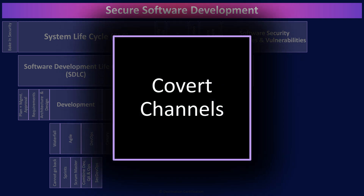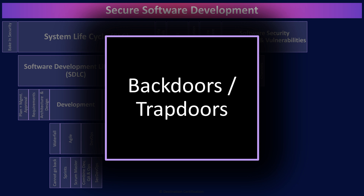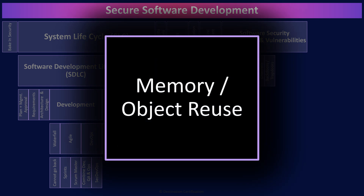Covert channels are an unintentional communications path that has the opportunity to disclose confidential information. There are two major types of covert channels: storage and timing, and storage is by far the most common. Backdoors, also known as trapdoors, are intentional covert methods of gaining access to a system and bypassing the normal authentication and encryption controls. An attacker will install a backdoor in a system or hide one in code, which allows them to gain unauthorized access to an application or system. Memory reuse or object reuse is a vulnerability in the way memory is allocated to applications. If application A has stored some data in a section of memory and then no longer needs that memory space, the memory can be deallocated and reallocated to another application B — and the risk occurs if the data that application A stored is now accessible by application B. To prevent this, the operating system should ensure memory is zeroed out before being reallocated to another application.